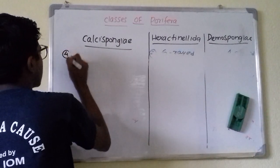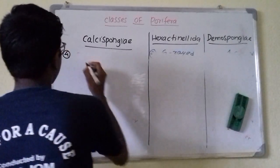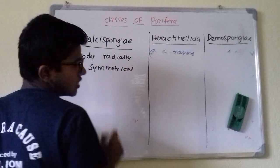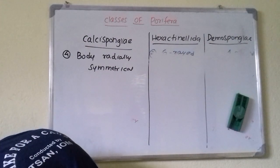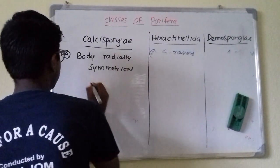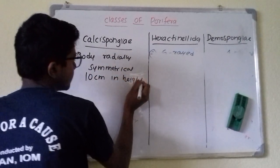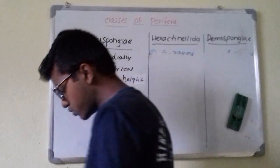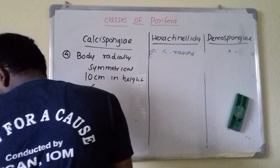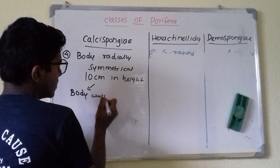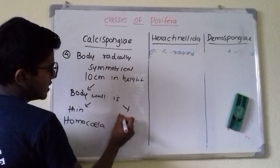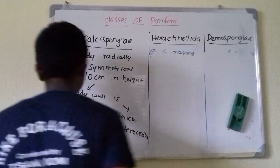Coming on to symmetry and body organization: in Calcispongia, the body is radially symmetrical and measures up to 10 cm in height. It consists of two subclasses — Homocoela and Heterocoela. The body wall is thin in Homocoela and thick in Heterocoela.